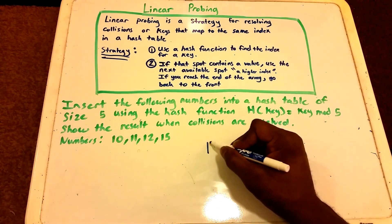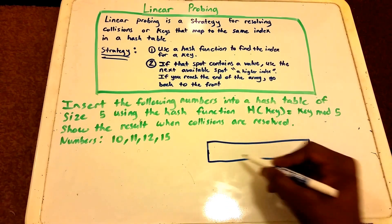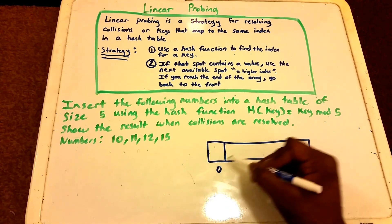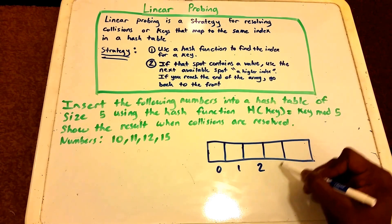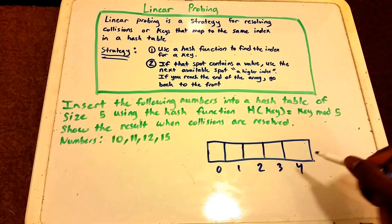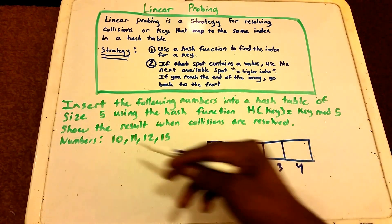Let's go ahead and get started. First we're going to create our hash table, and our hash table is going to be of size 5. So we start with index 0, index 1, index 2, index 3, and index 4, and this gives us a hash table of size 5.